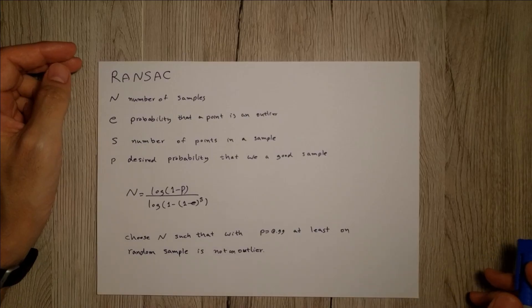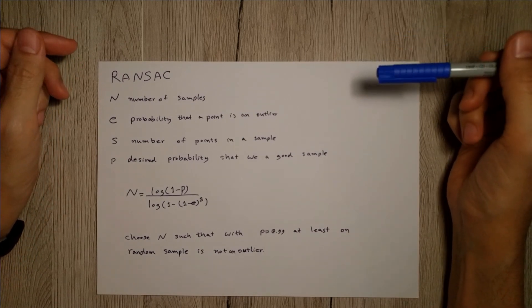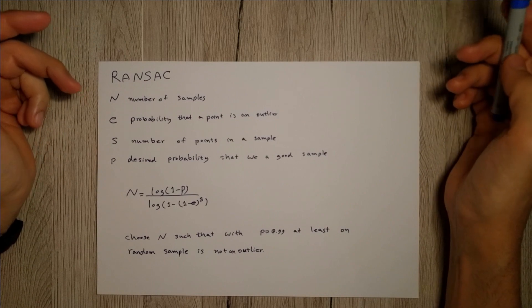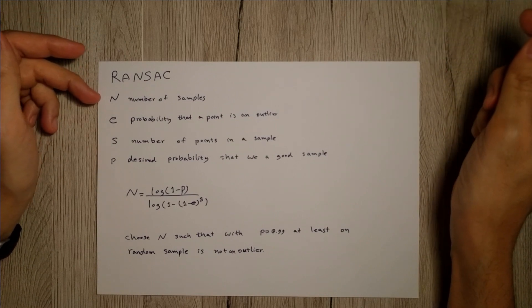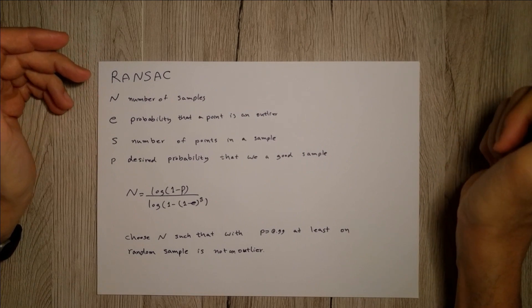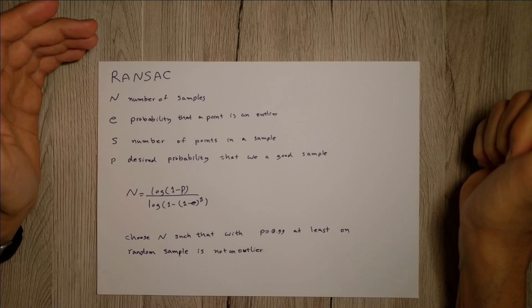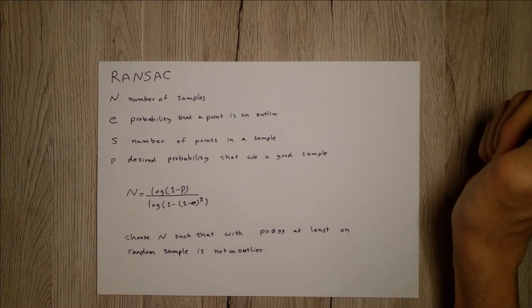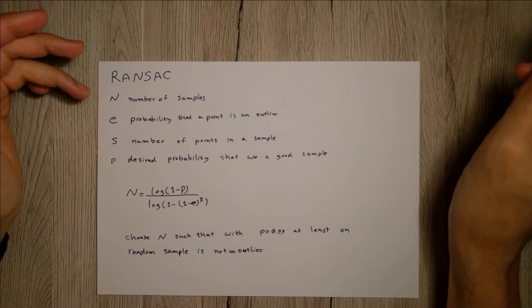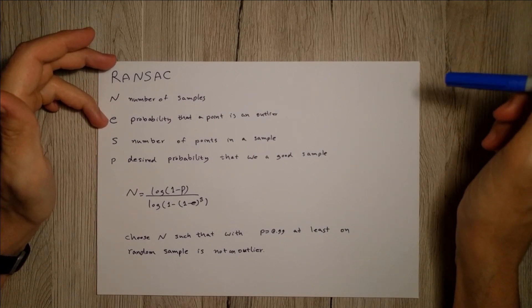Okay, now in this part I'm going to explain how we can choose N number of samples such that with a good probability we have at least one inlier in our data. So N is the number of samples that we're looking for, E is the probability that a point is an outlier.